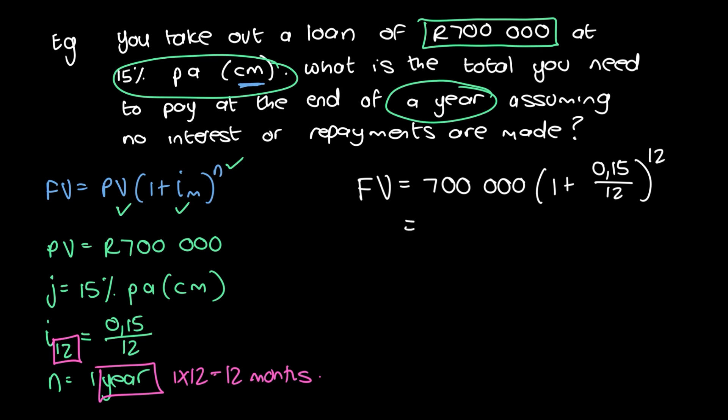And if we go ahead and put that into our calculator, we're going to get approximately equal to, because we're rounding off now, so let's just do that, 812,528.16. We round to two decimal places when we're handling finances or money.